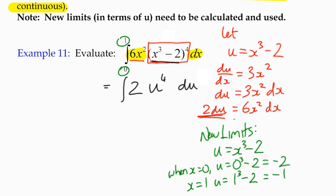So when we come to our new integral here, we have the integral of 2 u to the 4 du. The lower limit, which was 0, is now negative 2. And the upper limit, which was 1, is now negative 1, because that's the u equivalent of our values. And as long as we stick with that, we should be able to get the correct answer.